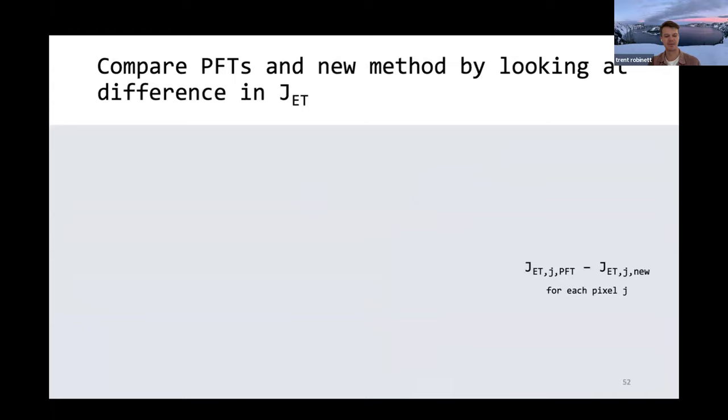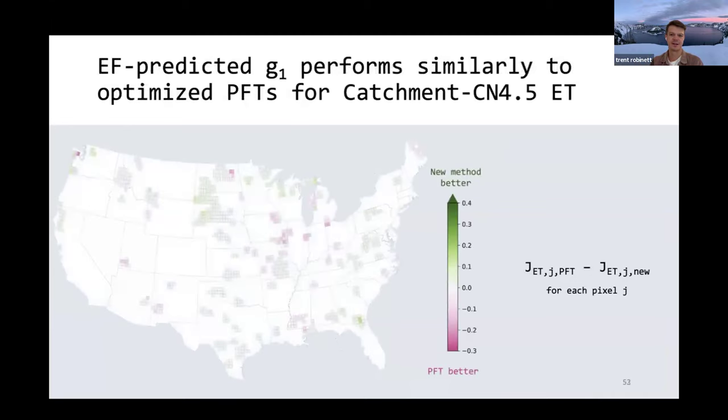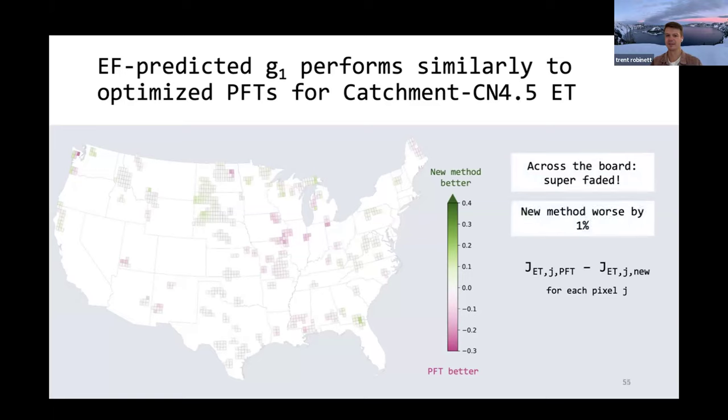I then just wanted to round out the story by showing the similar map, but for our evapotranspiration prediction, since that was our other constraint. Showing this map where everywhere in green is where our new method does better. Everywhere in pink is where the plant functional type based method does better. And really the takeaway here is that across the board, these colors are super faded. There's no way where we see huge differences between the two methods. And our overall change confirms that where our new method is worse by about one percent.